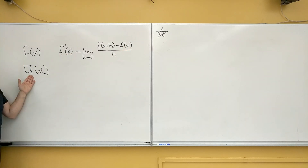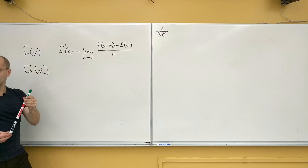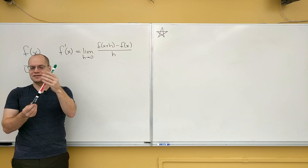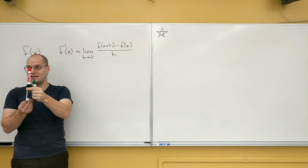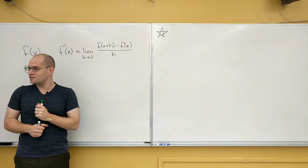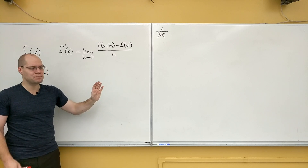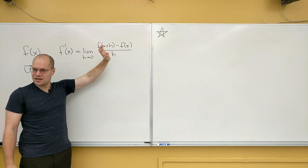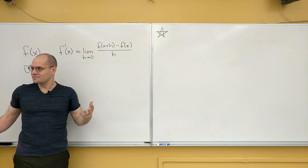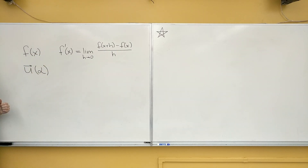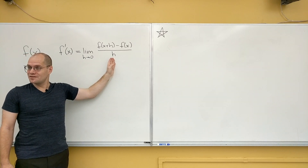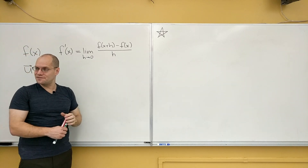Can we do subtraction with a vector-valued function? If we have u at some value of alpha and a different value of u at a nearby value of alpha, can we find their difference? Can we subtract vectors? Yes, we can. What comes next is dividing by a number — can we take the result of the difference and divide it by a number? Yes.